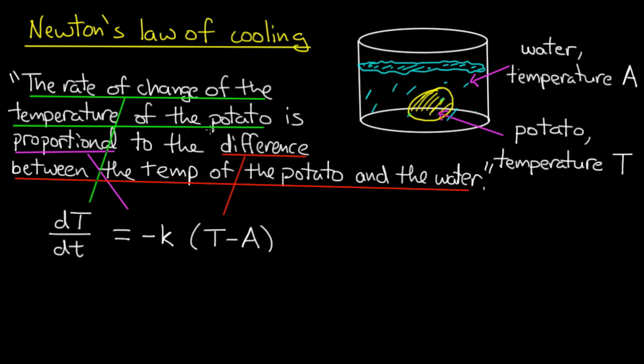So what we'll do is we'll take each piece of this sentence and turn it into a mathematical statement. So first, the rate of change of the temperature of the potato. What is that? Well, that's the derivative of T, the temperature, with respect to time. Second of all, the statement is proportional to. Well that means that it's equal to, this rate of change is equal to, some constant times this third part, which is the difference between the temperature of the potato and the water. And that's T minus A.